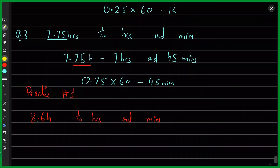The question says convert 8.6 hours to hours and minutes. This means: take out the complete number of hours, which is 8, and then convert the remaining 0.6 hour to minutes. The issue is that while you can first convert 8.6 hours entirely to minutes and then extract hours, that is not the right approach here. When the number of hours is already clearly stated, there's no point converting the whole thing to minutes first.